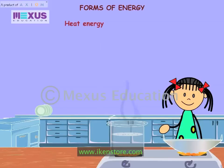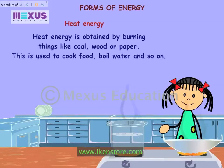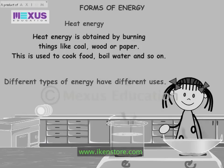Heat Energy is obtained by burning things like coal, wood or paper. This is used to cook food, boil water and so on. Different types of energy have different uses.